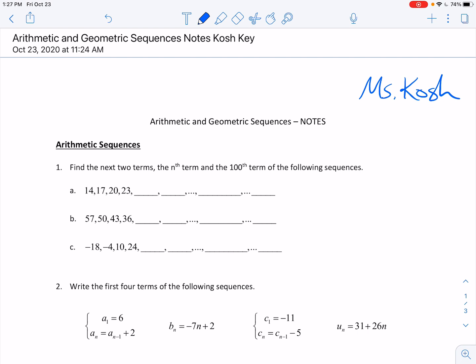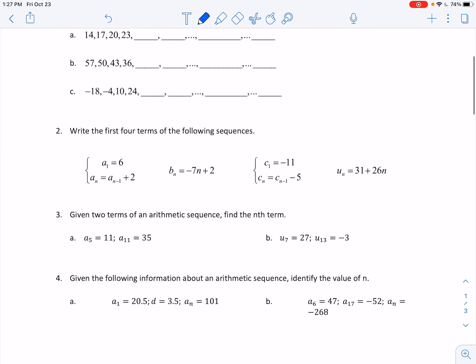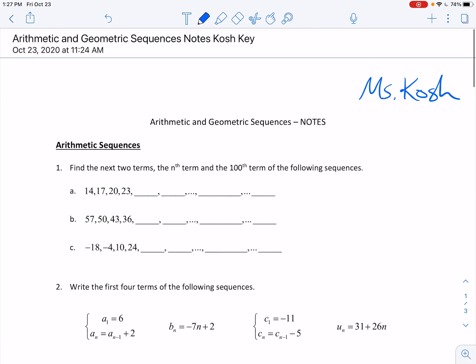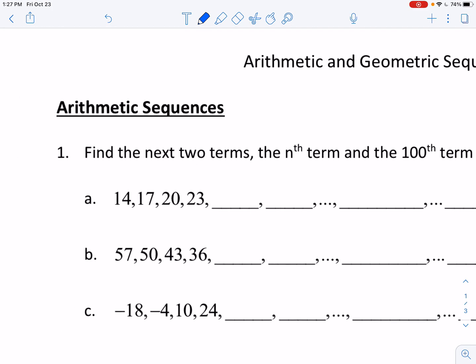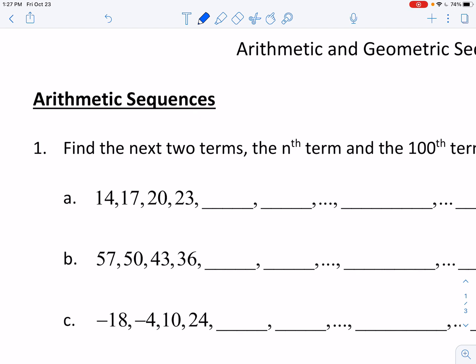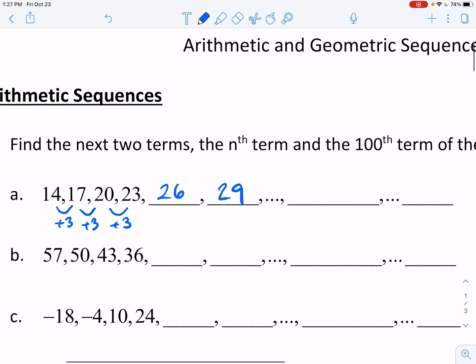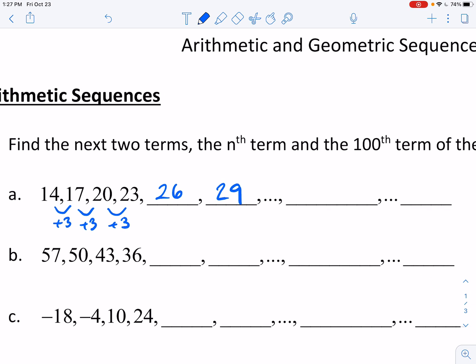A sequence is a list of numbers that are separated with commas. There's two main types of sequences that we will study, and those are arithmetic sequences and geometric sequences. Notice in this first one, what we're doing here is we have added three, we've added three, we've added three. To get the next term, we would add three, we would add three.